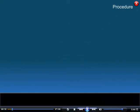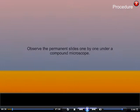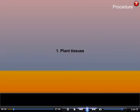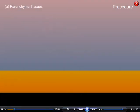Procedure: Observe the permanent slides one by one under a compound microscope. Observation 1 — Plant tissues. A. Parenchyma tissues.